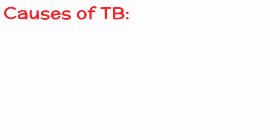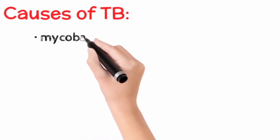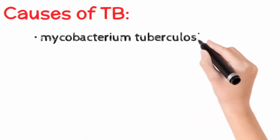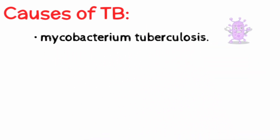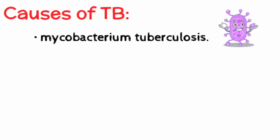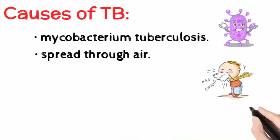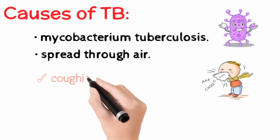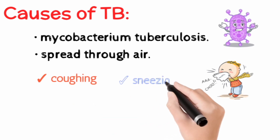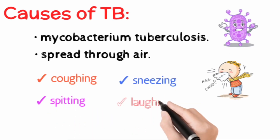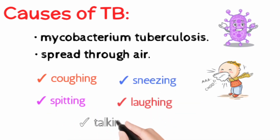The Mycobacterium tuberculosis bacterium causes TB. It is spread through the air when a person with TB whose lungs are affected coughs, sneezes, spits, laughs, or talks.